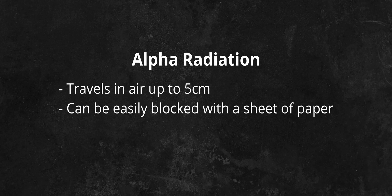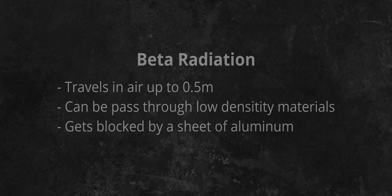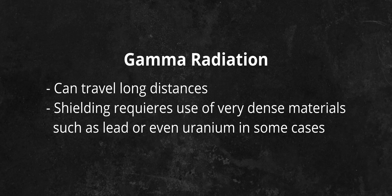Alpha particles can travel in air up to 5cm and can be easily stopped with a thicker piece of paper. Beta particles can travel in air up to half a meter and can go through low-density materials, but a piece of aluminum should be enough to block them. Gamma rays can travel very long distances and are the hardest to shield, requiring very dense materials such as lead or even sometimes uranium.